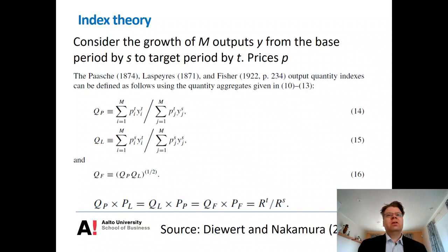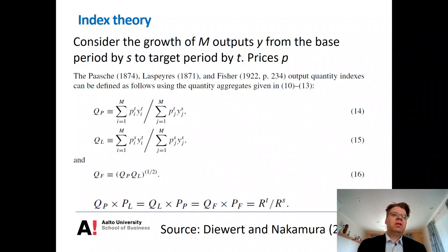In the 1920s, eminent economist Irving Fisher proposed that since there's no good reason to prefer either the base period or target period prices, why not take simply the geometric mean of these two indices? That is equation 16. The geometric mean is computed by multiplying the Paasche index and Laspeyres index and taking the square root of the resulting product.